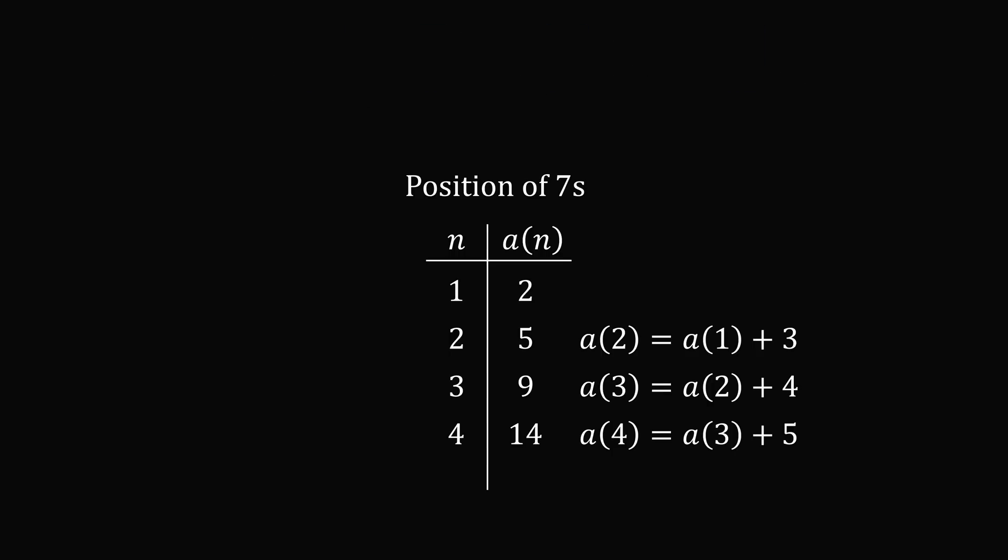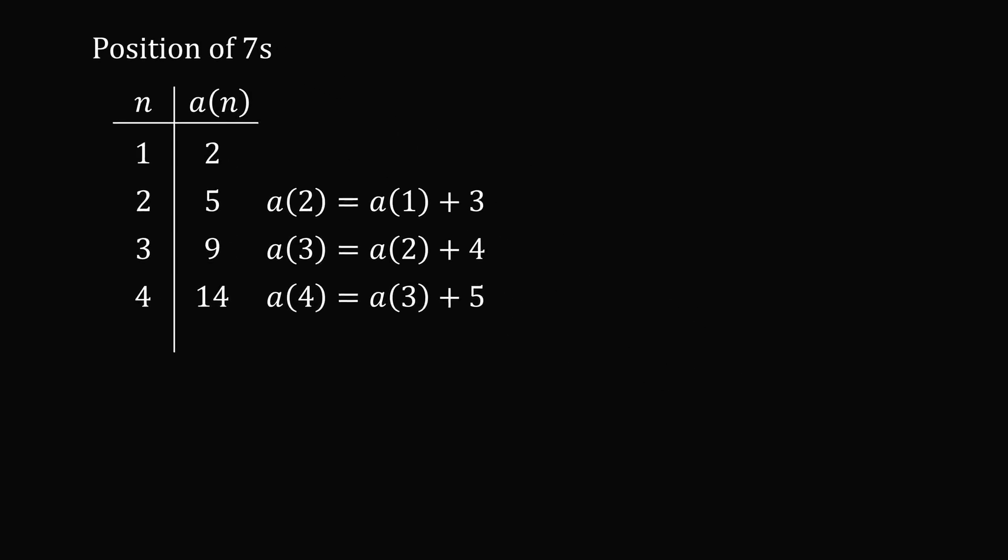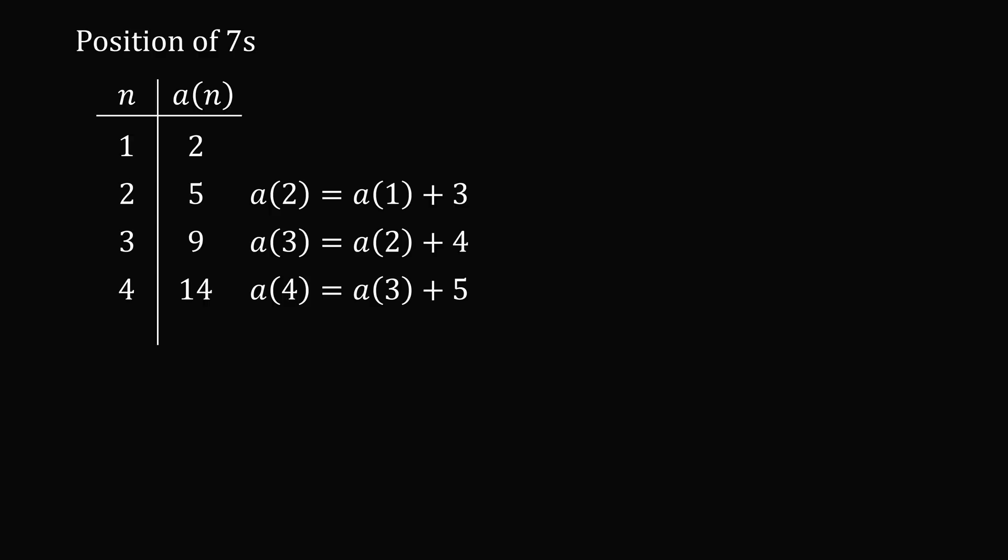So let's work out the general case. We have a(2) = a(1) + 3, which we can rewrite as a(1) + (2 + 1). a(3) = a(2) + 4, which we can rewrite as a(2) + (3 + 1). Then a(4) = a(3) + 5, which we can rewrite as a(3) + (4 + 1). So continuing this pattern, a(n) = a(n-1) + n + 1.